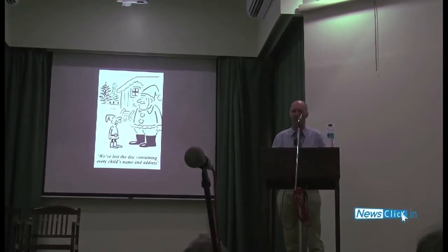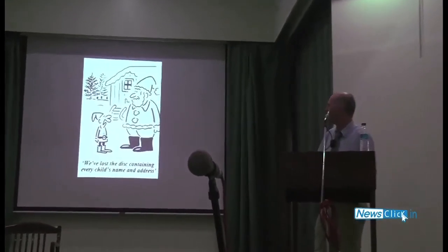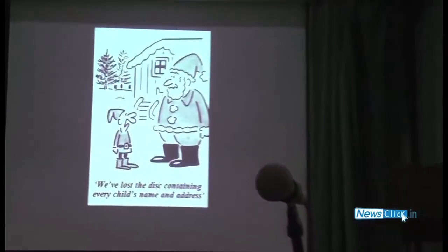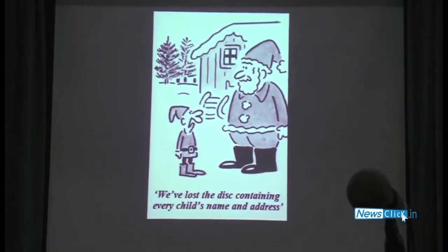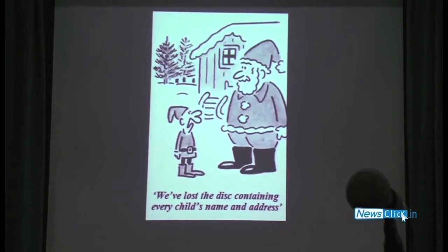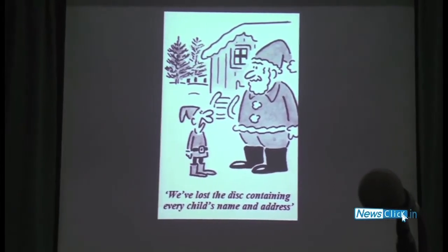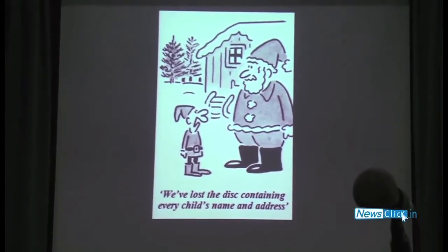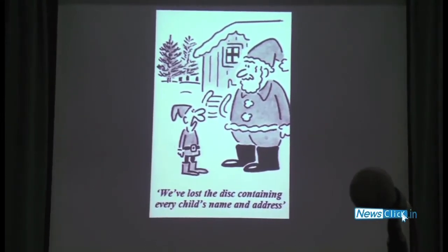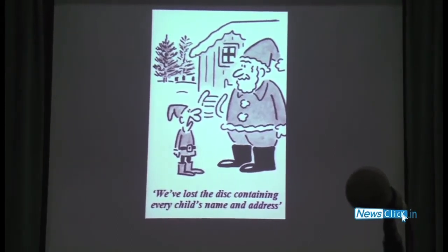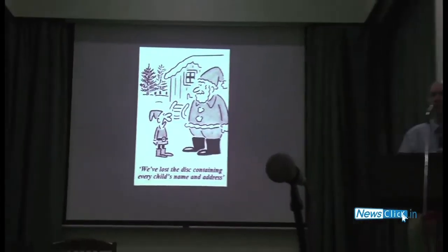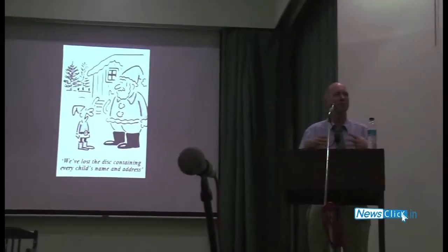When the minister stood up in parliament and said 'I'm really sorry but we appear to have mislaid data on 25 million families in the UK,' the press had a field day. My favourite cartoon said: 'We've lost the disc containing every child's name and address — we can't deliver them Christmas presents.' The government had been saying it would build a computer system to hold all your identity data and keep it really secure. We had said we weren't sure they were up to it, and they had demonstrated they were not.